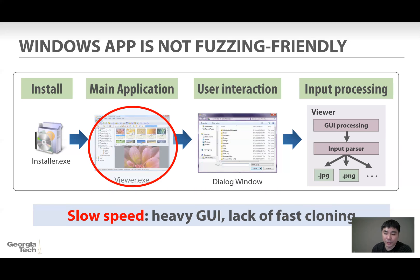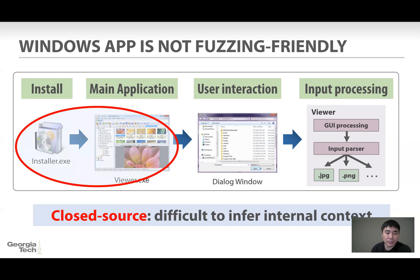The second challenge is slow speed. Initializing the GUI is heavyweight, and since Windows does not have a fast cloning mechanism like fork on Linux, it is very slow to create a new process. And finally, the closed-source ecosystem of Windows makes it difficult to infer the internal context of the binary.